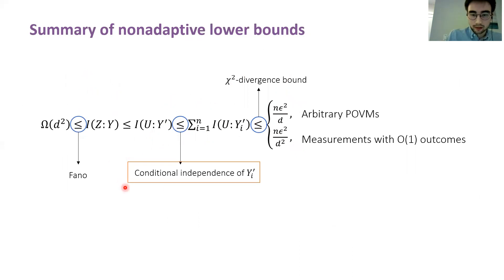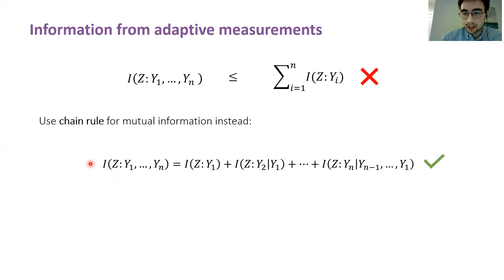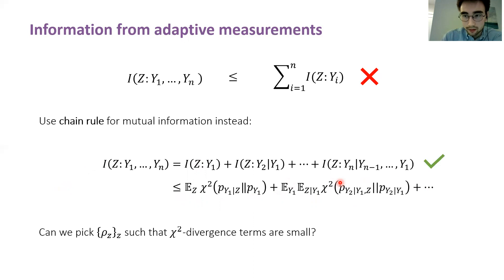Let's focus on conditional independence of the random variables, because this is the step that breaks down when you consider adaptive measurements. This is the sub-additivity property of mutual information that holds in the non-adaptive case — unfortunately, it doesn't hold when measurements can adapt. So we need something else. There's a chain rule for mutual information which says a certain equality holds, and we can try to use this fact: we upper bound each individual term by some expected chi-squared divergence.